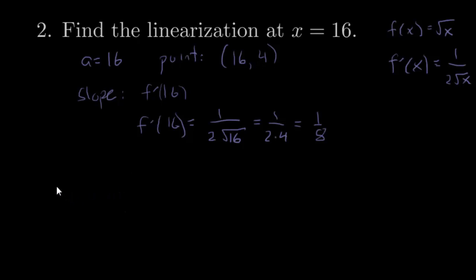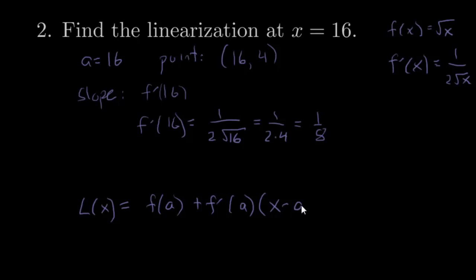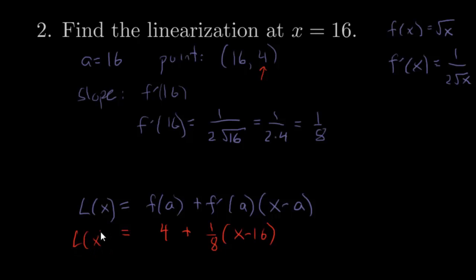So I have f prime of 16 as my slope. I have my point. Let's do the linearization. L of x equals f of a plus f prime of a times (x minus a), so that's 4 plus one-eighth times (x minus 16). And here is my linearization.